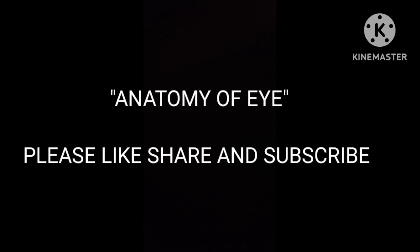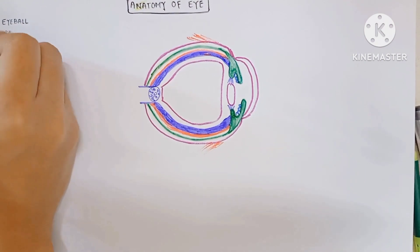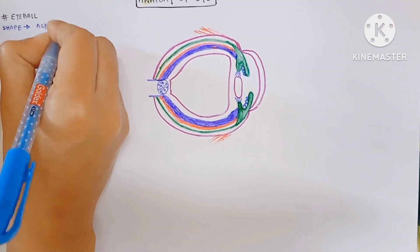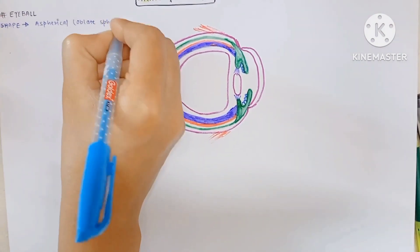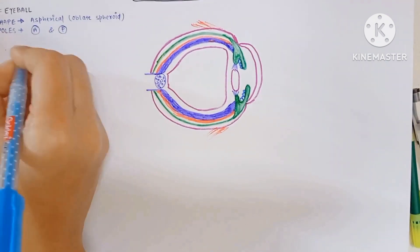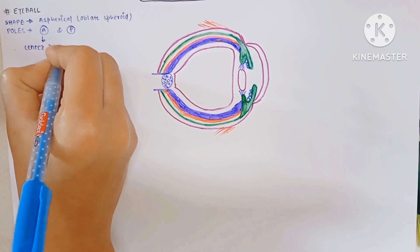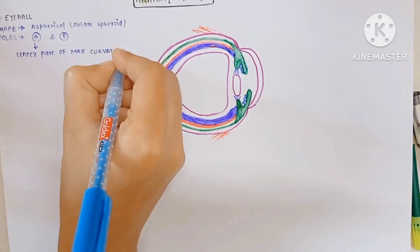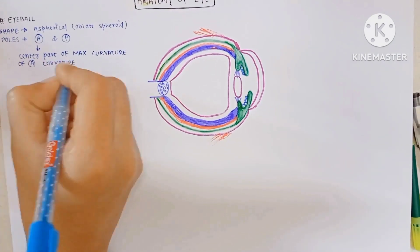Hello everyone, in this video we are going to talk about the anatomy of the eye. First, the eyeball. The shape of the eyeball is aspherical or oblate spheroid in shape. The poles of the eyeball are anterior pole and posterior pole. The anterior pole is the center part of the maximum curvature of the anterior surface.